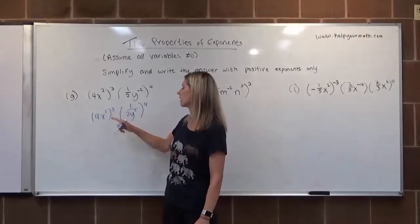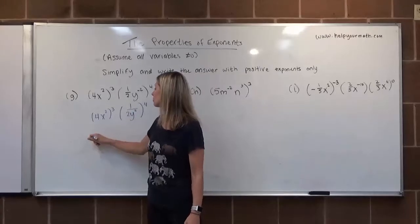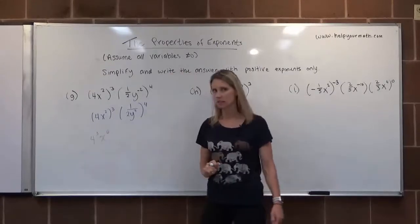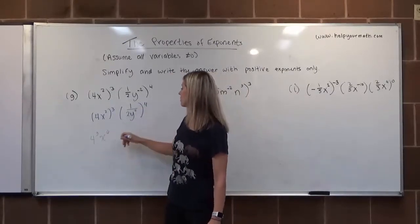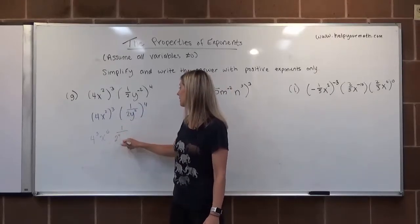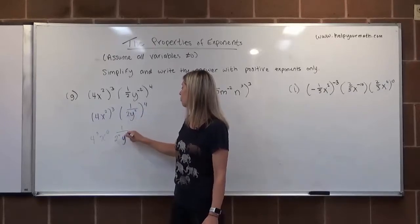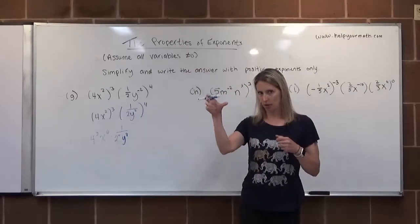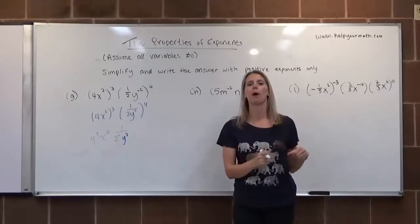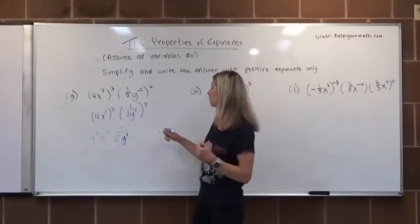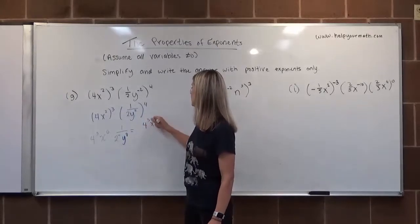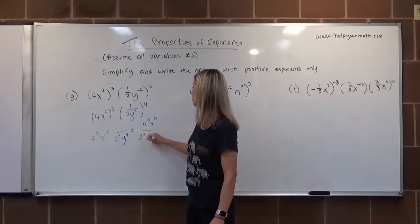This exponent of 3 gets distributed to the 4, giving 4 cubed. Then x squared to the 3rd gives x to the 6th. We distribute to the fraction: 1 to the 4th is 1, and y squared to the 4th gives y to the 8th. Since we have something without a fraction times something with a fraction, the first piece becomes part of the numerator. Rewriting: 4 cubed times x to the 6th over 2 to the 4th times y to the 8th.